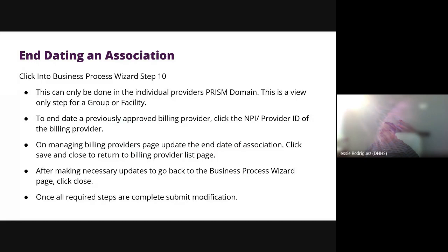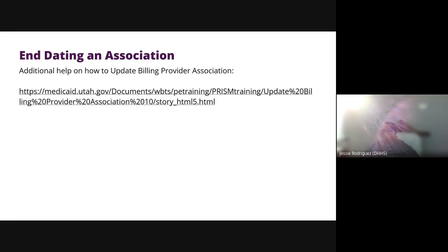Adding or end dating an association affiliation can only be done through the individual domain. You should not add or end date associations through the group or the FAO as they will not be processed correctly. A training video to assist with this process can be found on the medicaid.utah.gov website.